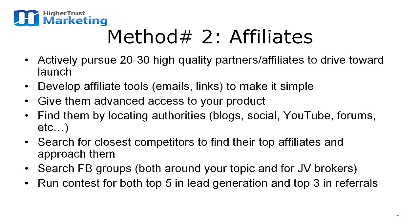Number two method is affiliates. If you've got your own products or at least your ability to resell products at a margin where you can bring on affiliates — e-commerce product margins are usually 10 to 15 percent, for information type products you could give away 40 to 50 percent — the method here is you need to go out and actively pursue these. A lot of mistakes are made by product creators uploading their product to their site, Amazon Kindle, ClickBank, or some directory and thinking affiliates are going to flock to it. Not true. Even for the best products, you need to actively pursue 20 to 30 high quality partners or affiliates to drive your launch.